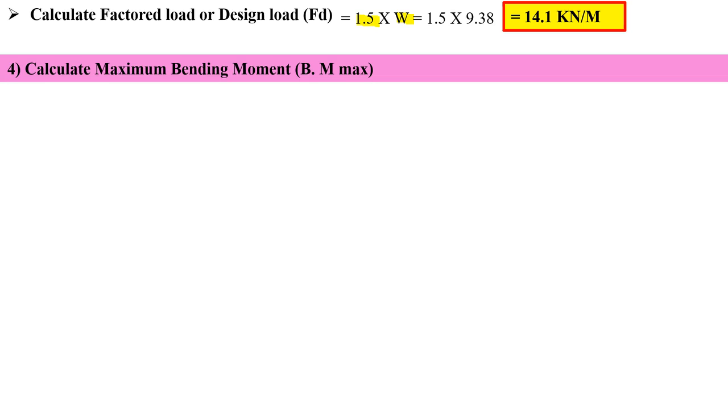Now calculate the maximum bending moment, BM max. The formula for cantilever slab is factored load multiplied by L effective squared divided by 2. Putting the values, I'm getting 17.27 kN meter.